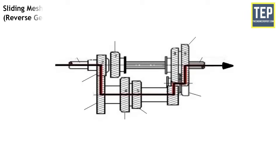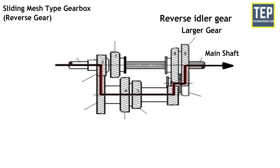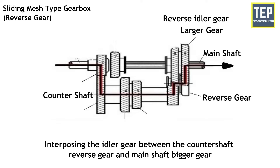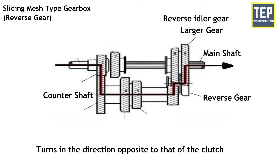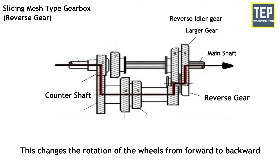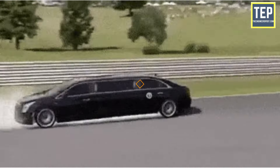For reverse gear, by operating the gear shift lever, the larger gear of the main shaft meshes with the reverse idler gear, which is always in mesh with the counter shaft reverse gear. By interposing the idler gear between the counter shaft reverse gear and the main shaft bigger gear, the main shaft turns in the direction opposite to that of the clutch shaft. This changes the rotation of the wheels from forward to backwards, so the vehicle moves in the backward direction.